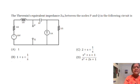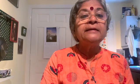If that is the case, then we see that s is going to be 0, so the answer is going to be 1. That is something that you have inherent in your mind as you read the problem. Let us read the problem: The Thevenin's equivalent impedance Z_th between the nodes P and Q in the following circuit is. Automatically, the answer is 1.